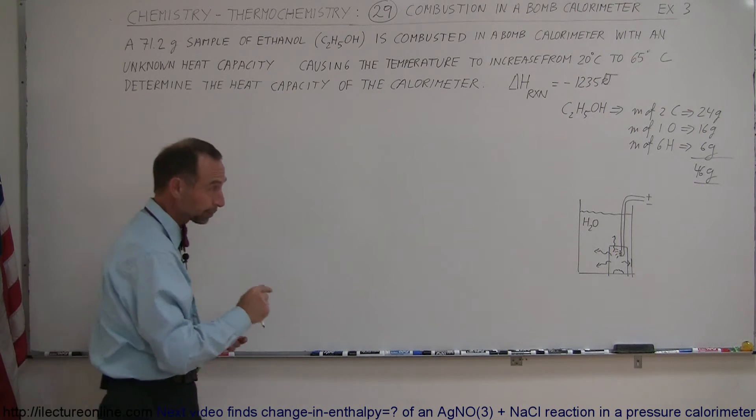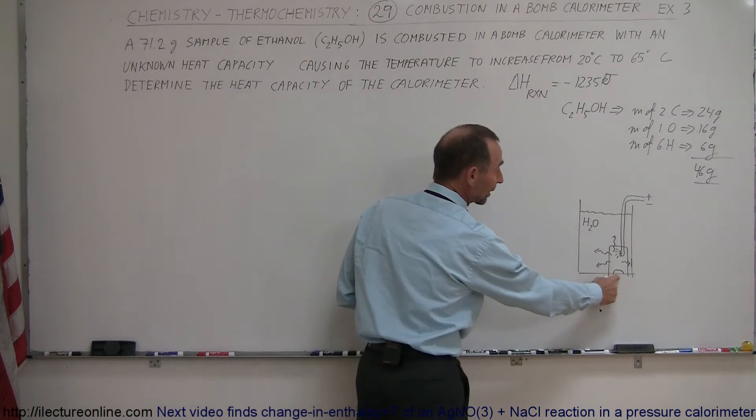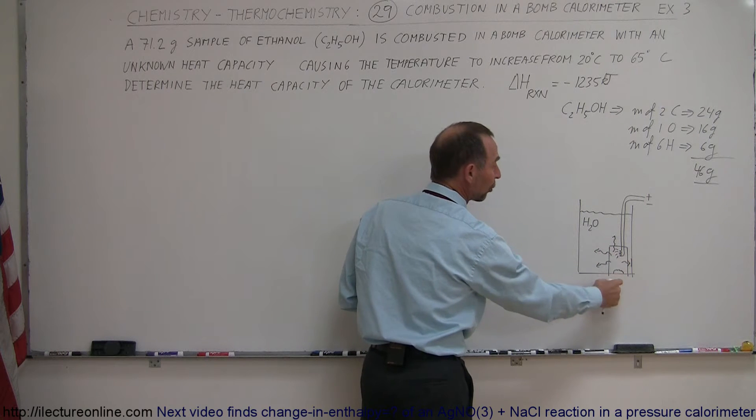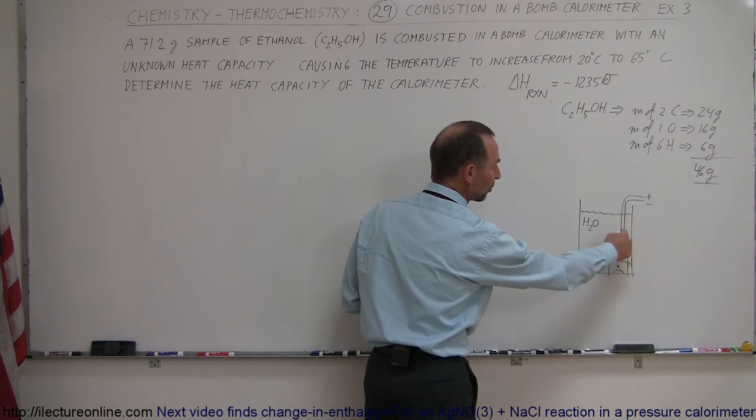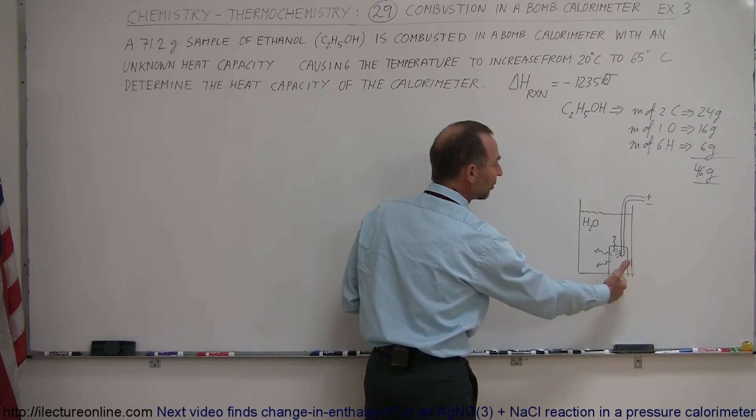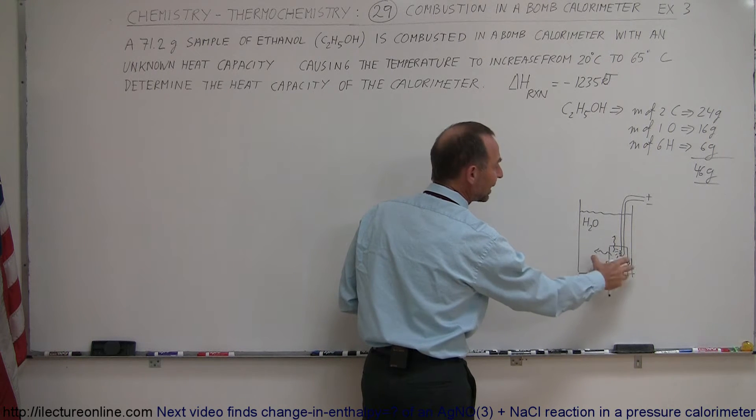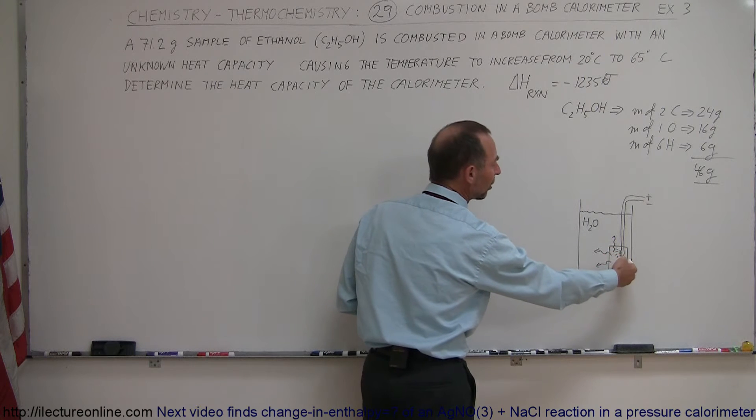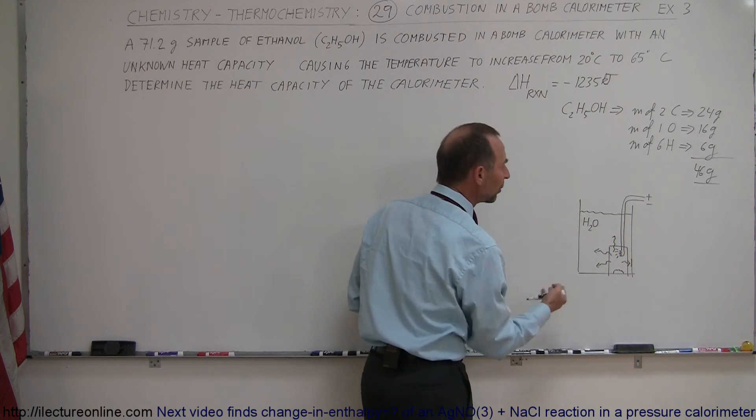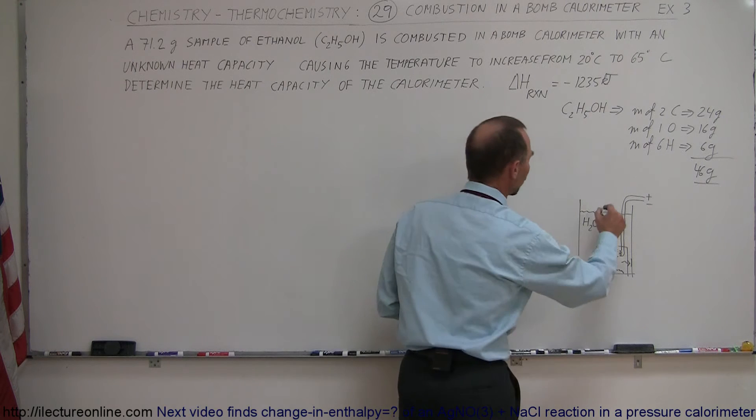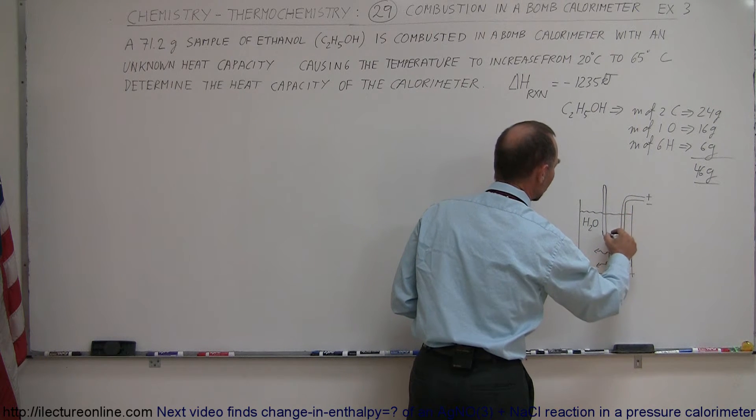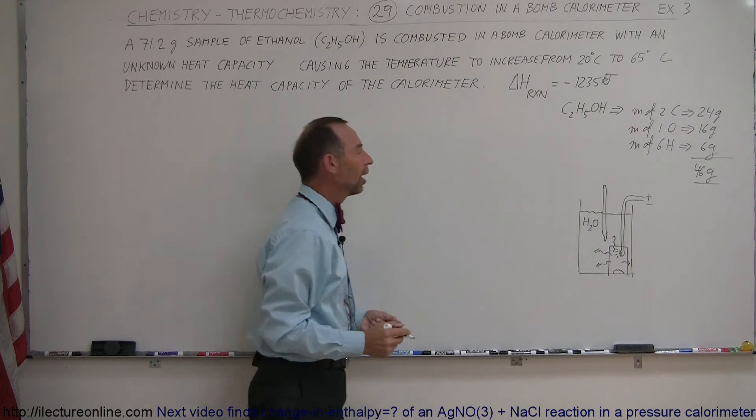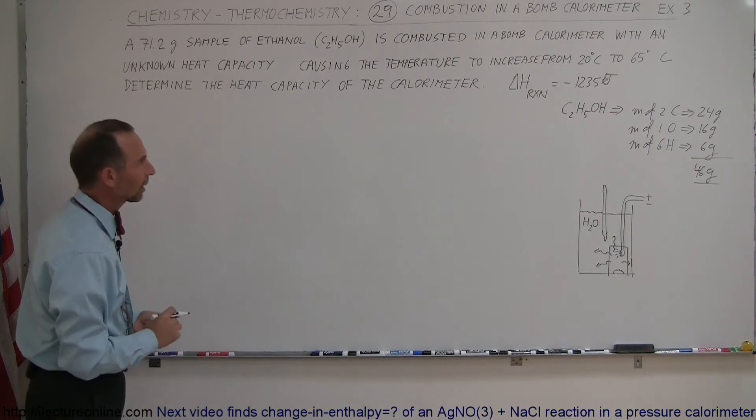So how do we do that? Well, you put the reactants inside the portion here that contains the volume of the gases, so you put a little spark in there, you ignite it, the combustion takes place, heat is generated. Since no work is done, all that heat will then end up in the calorimeter causing the temperature of the calorimeter to go up. Of course, we're going to need some sort of thermometer to measure the temperature change of that calorimeter.